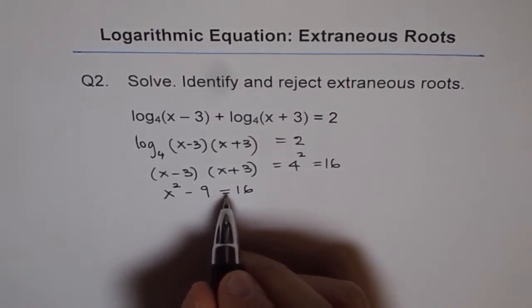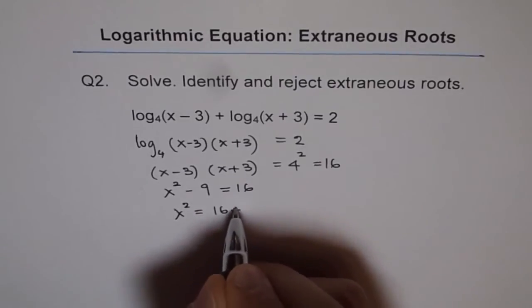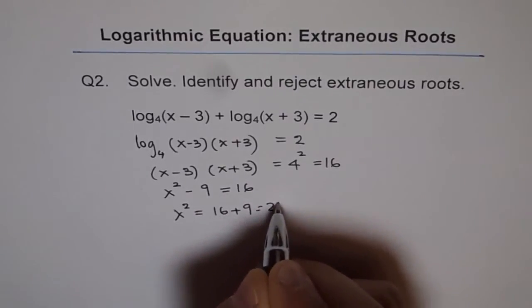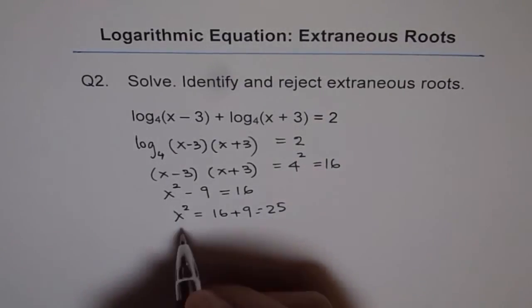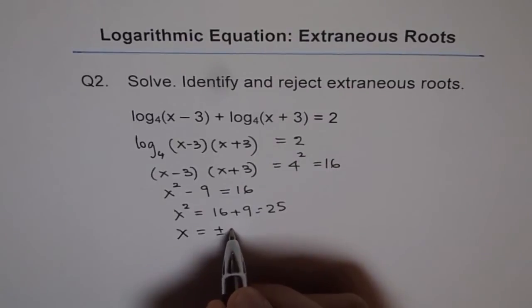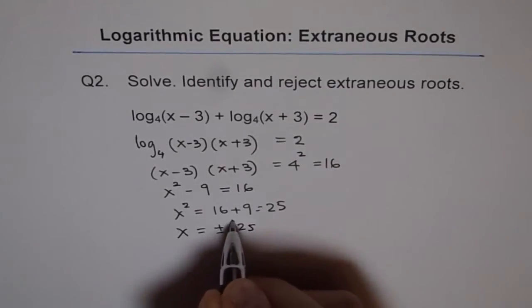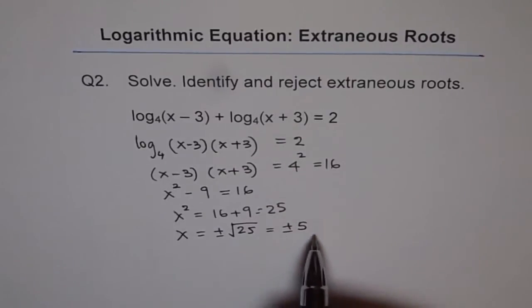So we get x² - 9 = 16, or x² = 16 + 9 = 25. We can square root 25 to get the answer, so x = ±5. So we get two answers: one is +5 and the other is -5.